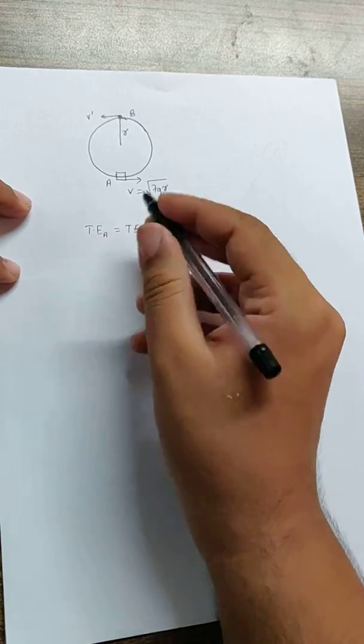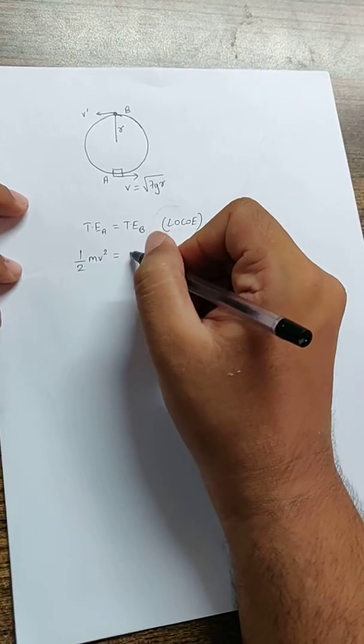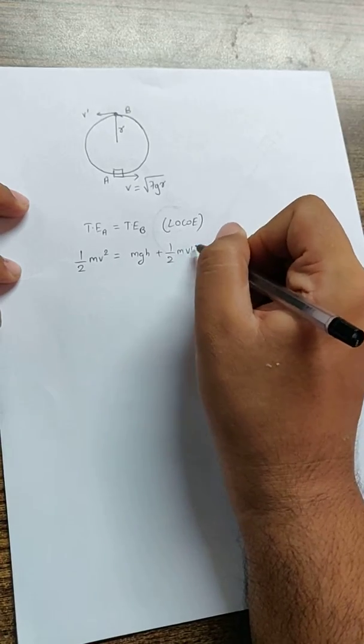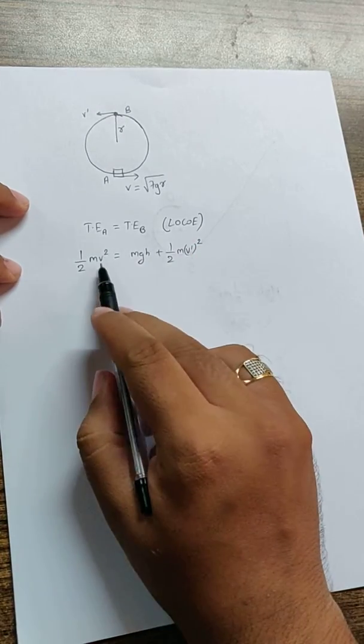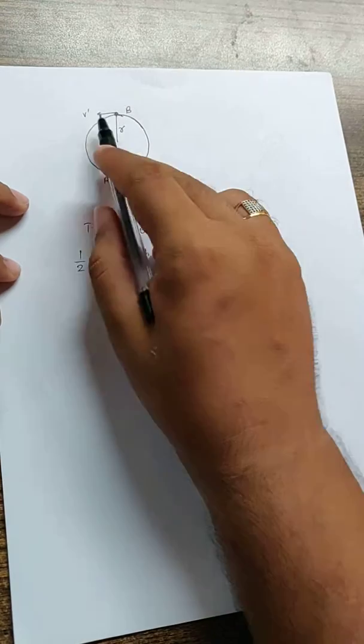Now the total energy at A is just the kinetic energy. And the total energy at B is going to be the potential energy plus the kinetic energy. You can see this is V and this is V dash velocity at A and V dash velocity at B.